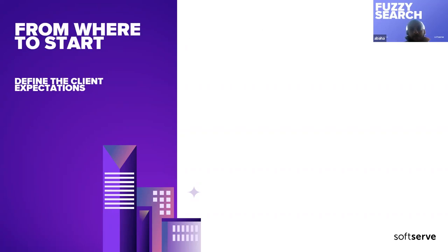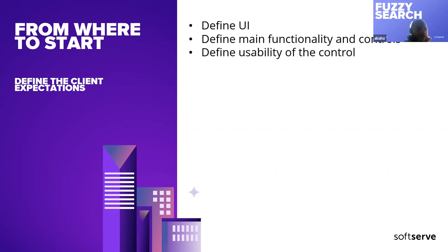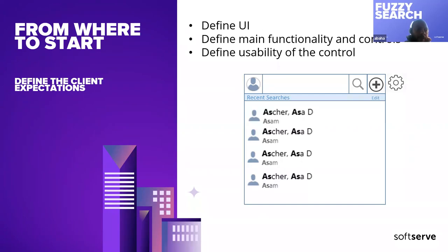So let's define the client expectation. In this stage, we should understand exactly what the client expects, and it's always better to use UI mockups to show how he can see the results. So as an example, spend more time here to draw the UI, as you can see in the picture, to understand exactly what the client wants. Because there are small changes in this picture that can really change all your calculations about how you can implement this feature.